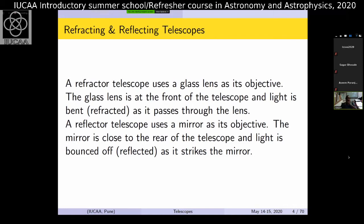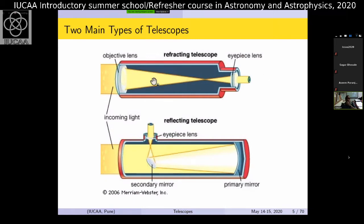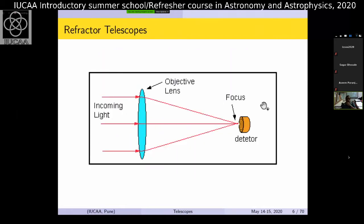A refractor telescope uses a glass lens as its objective — usually the largest part — which collects the light. The light is refracted through this lens and you see it through the eyepiece. In contrast, a reflecting telescope uses no large lens; the light comes in as parallel rays, gets reflected at the primary mirror (concave or parabolic), then at a secondary mirror and exits from the side. These are the two basic types.